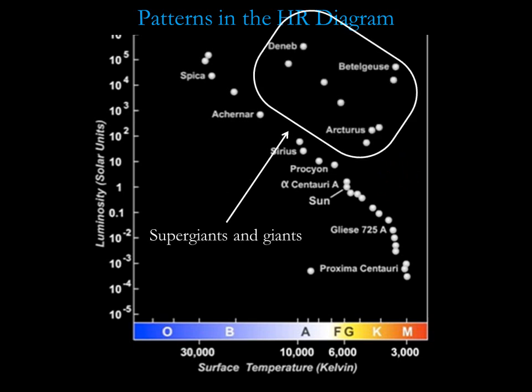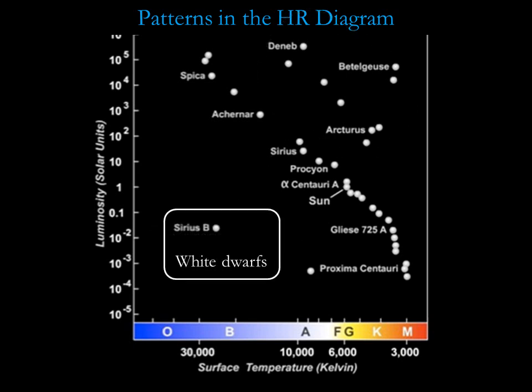Stars in the upper right are called supergiants because they are very large in addition to being very bright. Just below the supergiants are the giants, which are somewhat smaller in size and lower in luminosity, but still much larger and brighter than the main sequence stars. Stars near the lower left are small in size and pure white in color because of their high temperatures. These stars are called white dwarfs.